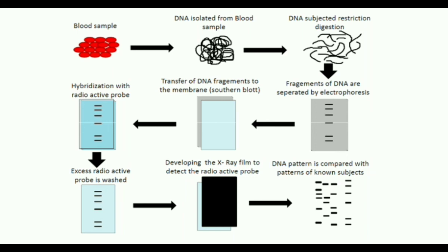Paternity testing is another useful application. DNA fingerprinting is also used in cases of child stealing or baby mix-ups in hospitals, to identify the correct parents. Additionally, it can detect meat adulteration — for example, when low-cost meat is mixed with high-priced meat.